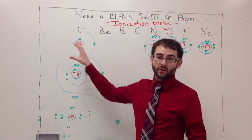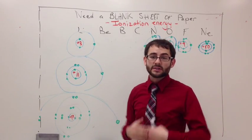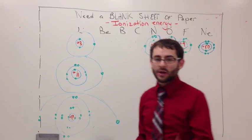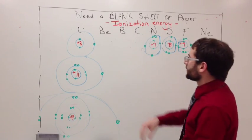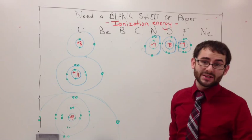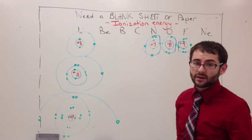First thing, we know metals, which are on the left, they like to give up electrons. That's why they're always plus one, plus two, plus three. We know that the non-metals always like to gain electrons. They're the negative ones.